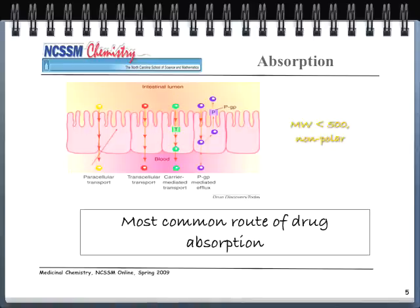Absorption requires getting the drug through a membrane. By now you know the molecular weight has to be less than 500 grams per mole, these are typically non-polar molecules, and you've learned about the Lipinski rules — number of hydrogen donors, hydrogen acceptors, and the log P value. There are also different types of transport mechanisms: paracellular, transcellular, carrier-mediated transport, and what we call PGP effects, where PGP stands for plasma glycoprotein. You'll learn about that in this week's lab.